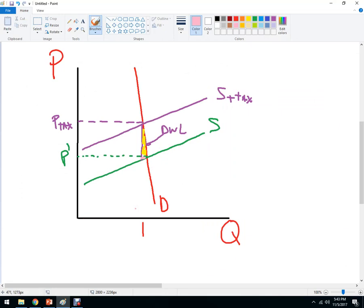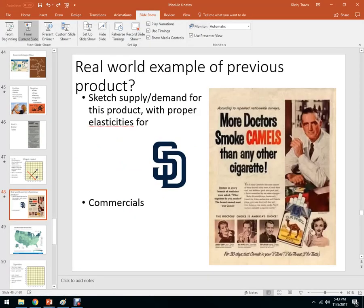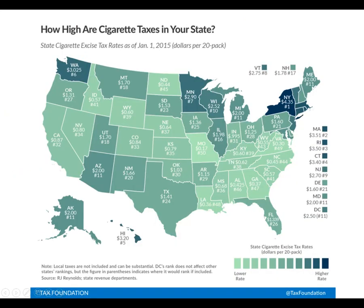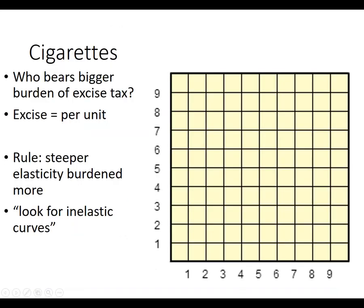When designing tax policy and thinking about per unit excise taxes and how they affect firms, we need to remember that the consumer often ends up paying. Arizona's cigarette tax is $2 per pack. An unintended consequence is that people buy cigarettes in low-tax states, drive them to high-tax states, and sell them on the black market, using that money for other criminal enterprises.